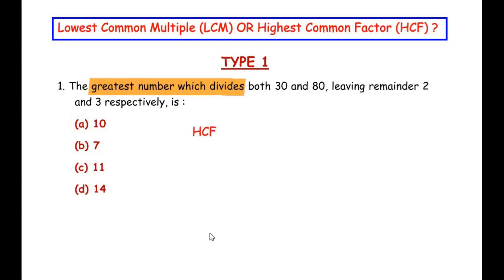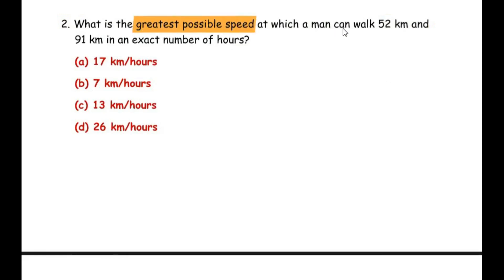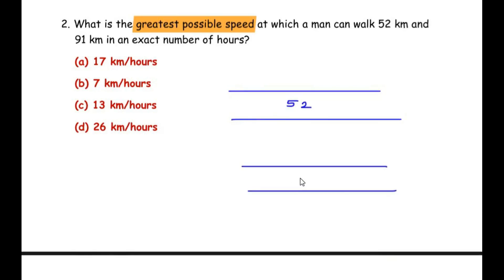The second question of this type: What is the greatest possible speed at which a man can walk 52 kilometers and 91 kilometers in an exact number of hours? The keyword here is 'greatest possible speed.' Consider two roads — 52 km and 91 km. The man is trying to walk as fast as possible in an exact number of hours, so we need a common number for the speed. Since we are looking for a common number between these two, we find the HCF of 52 and 91, which gives the greatest possible speed.